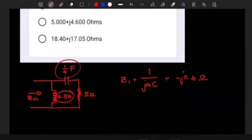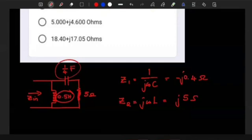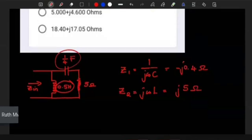In the same way we get the second impedance due to that inductor. It's j omega L, and when you substitute with angular frequency as 10, this is going to be j5.